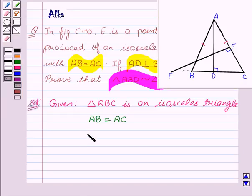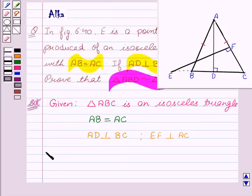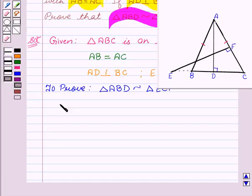We are also given that AD is perpendicular to BC and EF is perpendicular to AC. Now we have to prove that triangle ABD is similar to triangle ECF. Let's see the proof.